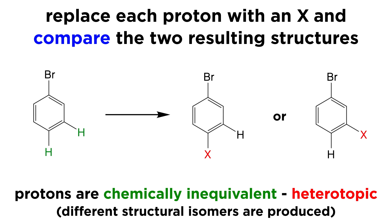First, if the two compounds are structural isomers, then the protons were chemically inequivalent. They did not see the same chemical environment, which is why different structural isomers are produced when the protons are replaced by another group. We can say that the protons are heterotopic.